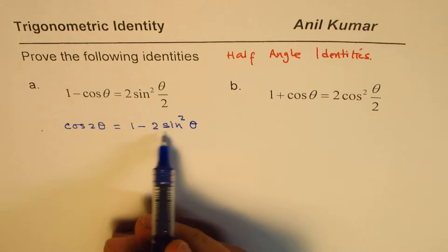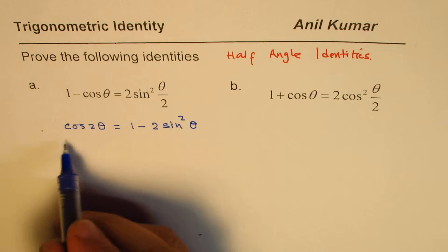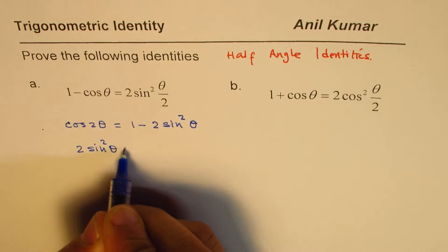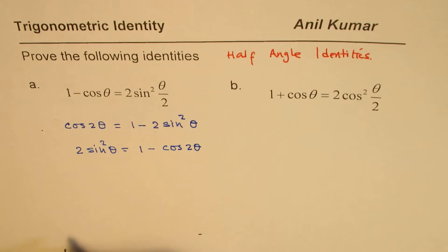Now, we'll isolate, since we need 2 sine square theta by 2, we'll just isolate this term. So we'll bring it on this side. So we have 2 sine square theta equals to 1 minus cos 2 theta.